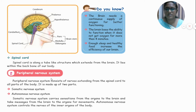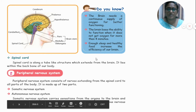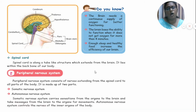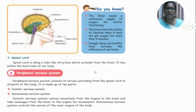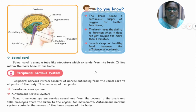Now let's move on to the peripheral nervous system. The peripheral nervous system consists of nerves extending from the spinal cord to all parts of the body. It is made up of two parts: the somatic nervous system and the autonomous nervous system. The somatic nervous system carries sensations from the organs to the brain — for example, when we touch, we feel. It also takes messages to the brain to lift your right or left hand. The autonomous nervous system controls the nerves of the inner organs of the body.